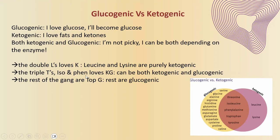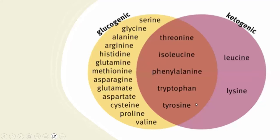Then we have the triple T's, iso, and fen — a little mnemonic. The triple T's are threonine, tryptophan, and tyrosine. Iso is isoleucine and fen is phenylalanine. They are both ketogenic and glucogenic — I call that KG. The rest are what I call 'top G' — they are purely glucogenic. This Venn diagram helps remember all of this, but it's easier to just recall: leucine and lysine are purely ketogenic; the triple T's, iso, and fen are both; and the rest are glucogenic.